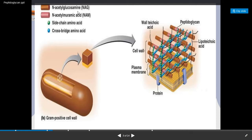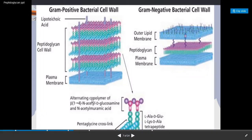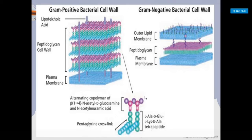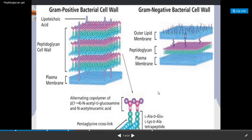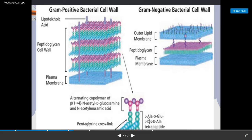The two sugar units — N-acetylglucosamine and N-acetylmuramic acid — are linked to each other by a bond called the beta-1,4 glycosidic bond. Attached to N-acetylmuramic acid is a chain of four amino acids: L-alanine, D-glutamic acid, L-lysine, and D-alanine, which is called the tetrapeptide. There is also a pentaglycine cross-link, meaning five glycine amino acids form the cross bridge between peptidoglycan chains.